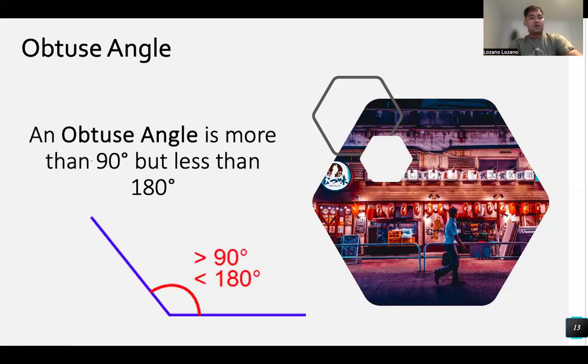Next. Obtuse angle. So ano naman yung obtuse angle? Obtuse angle is more than 90 degree. Pag lumagpas na siya sa 90 degree. But less than 180 degree. Dapat hindi aabot sa 180 degree. So that is obtuse angle. So paano naman ang obtuse angle? Ang obtuse angle ay, so acute, right angle, and obtuse angle. That is obtuse angle. So more than 90 degree. Ibig sabihin yan, lumagpas na siya sa 90 degree. Pero hindi dapat siya makapunta sa 180 degree. So that is obtuse angle.